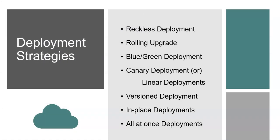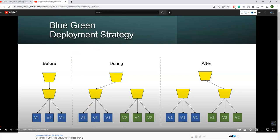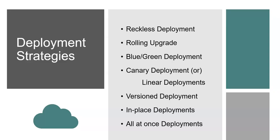These are the various deployment strategies that DevOps engineers or architects usually follow for any production movement: reckless deployment, rolling upgrade, blue-green deployment, canary, versioned, in-place, and all-at-once deployments. I have covered all those strategies in my other video on deployment strategies for cloud and on-premises. In today's video, I'm going to cover blue-green deployment and canary with real-life examples.